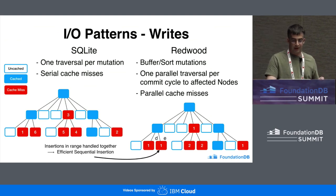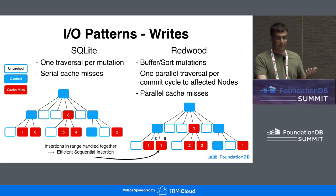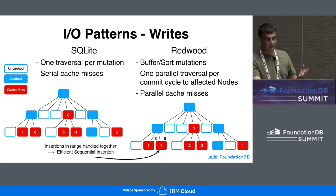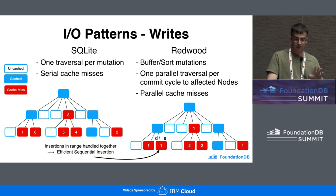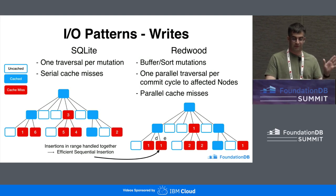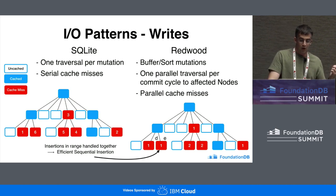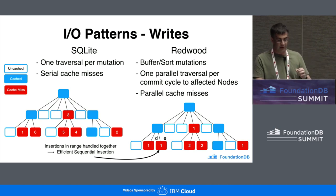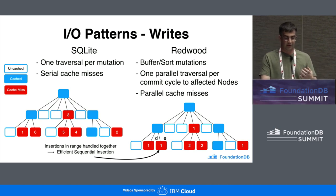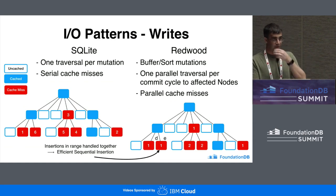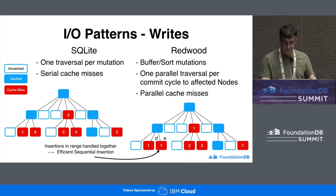Also, if we had a bunch of changes during a one-second commit cycle — a bunch of different writes between keys D and E — all of those insertions in that range would be handled together at once, which makes for very efficient sequential insertion in Redwood.